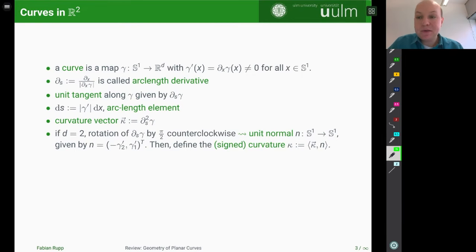Two more things we have for the setting of curves. So we have the curvature vector, which is given by the second order derivative d_s² of the curve gamma. This is always normal to the curve, so it's orthogonal to the tangent. And in dimension two, this means that it's parallel to the unique normal.